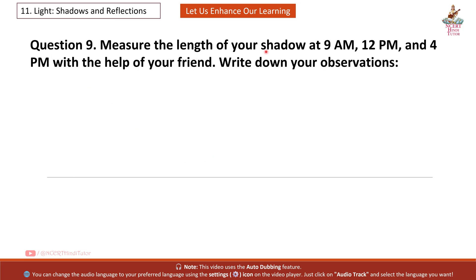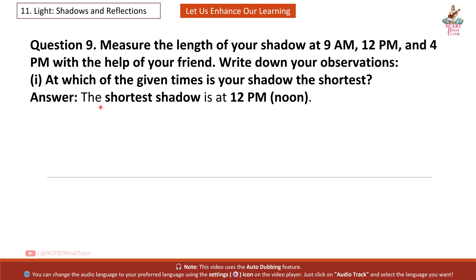Question 9: Measure the length of your shadow at 9 a.m., 12 p.m. and 4 p.m. with the help of your friend. Write down your observations. First, at which of the given times is your shadow the shortest? Answer: The shortest shadow is at 12 p.m. noon.